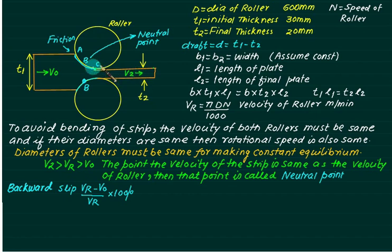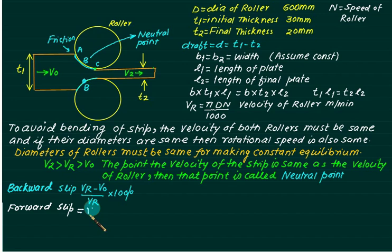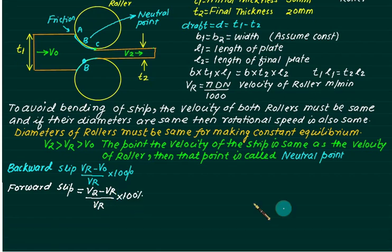At point C velocity equals V2, and at point B velocity equals Vr. Since V2 is more than Vr, forward slip is defined as: V_forward_slip = (V2 − Vr) / Vr × 100%. Remember, every velocity is divided by Vr, the neutral point velocity — all velocities are compared with the neutral point. Both backward slip and forward slip are positive values.